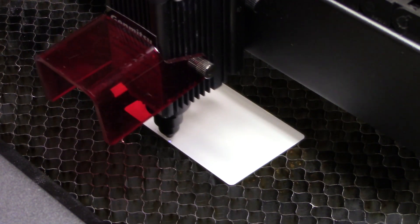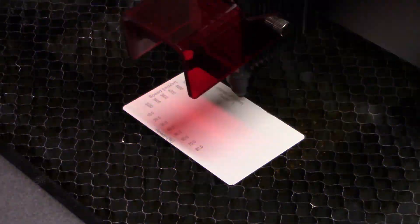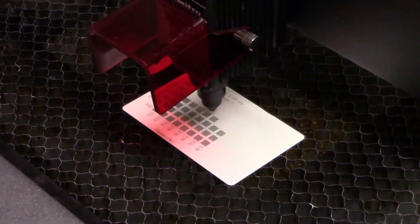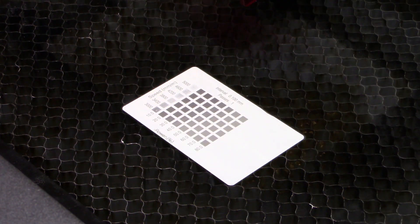My next test was to use an aluminum business card blank. I coated it with titanium dioxide and then I ran a material test so I could really get a good idea of what was going on.